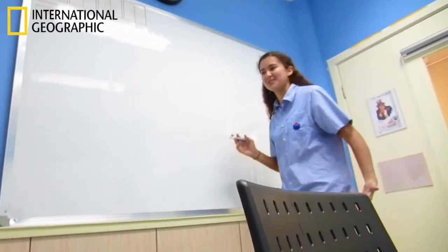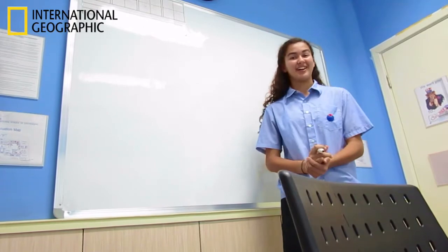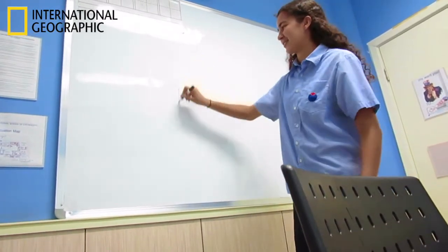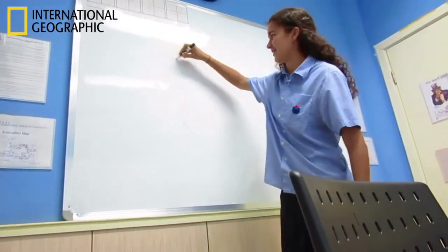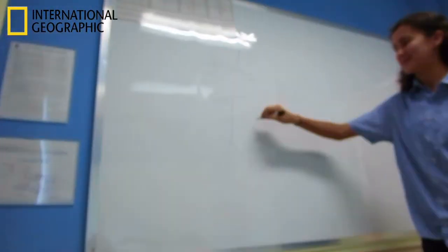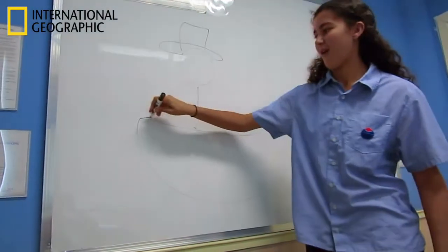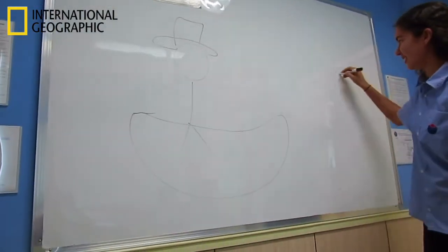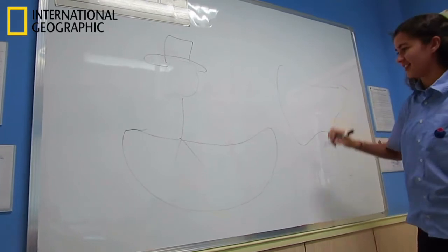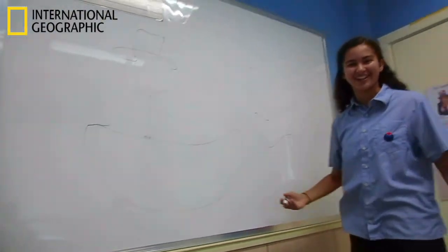Hello students. Today we'll be learning about the discovery of America. There was a guy called Christopher Columbus — he was wearing a fancy hat. And then he came to America by riding a boat. When he saw America, he hopped off the boat and came ashore.